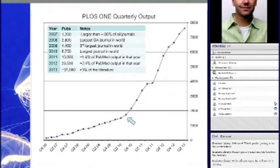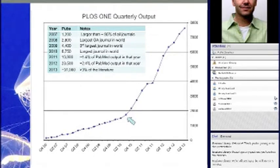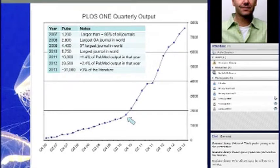This chart shows the quarterly output of PLOS-1 since it launched. The literature indexed in PubMed is about a million articles a year, so 31,000 is about 3% of everything in PubMed, and there are 25,000 journals in the world. So one journal is now publishing 3%, and you can see how it's growing quarter over quarter. The arrow marks the day the journal got an impact factor, and the growth accelerated dramatically. The journal didn't change at all — nothing is different before and after that arrow. It's simply the fact that it got a number that some people value for their publication decisions.